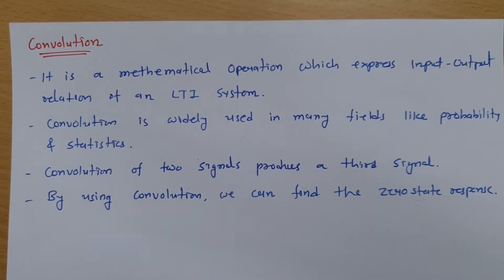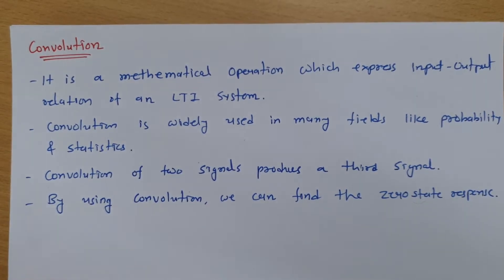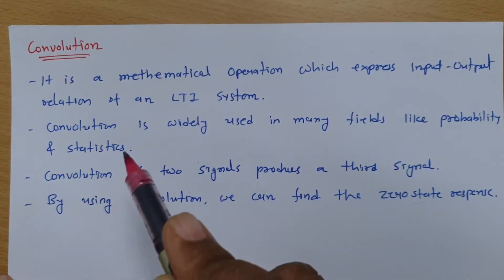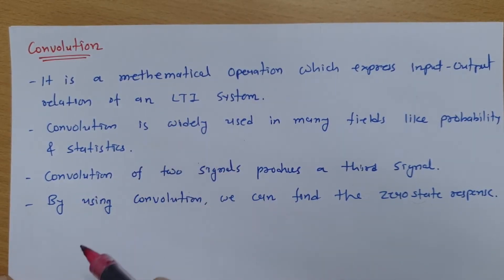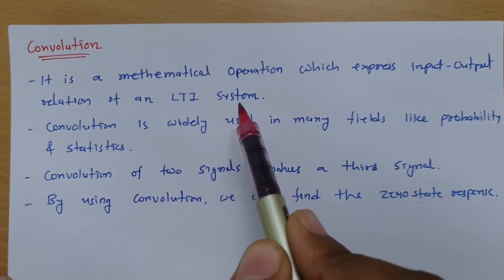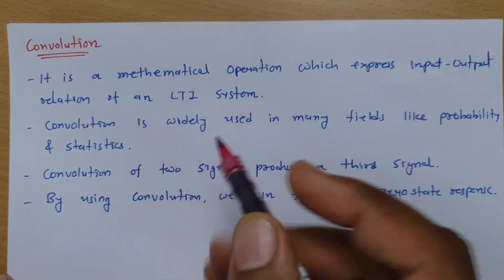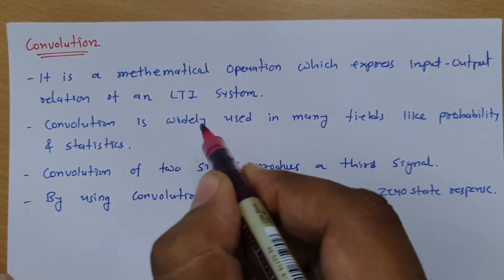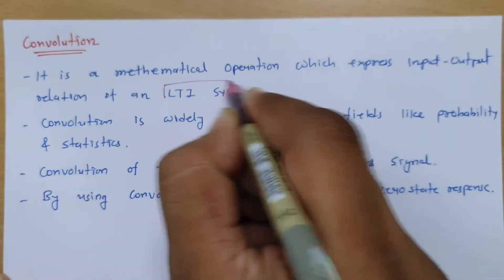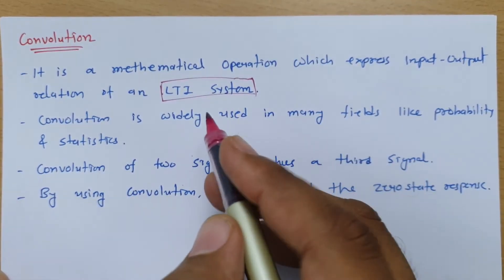Welcome to the signal and system lecture series. In this session I will be explaining some basics of convolution — what convolution is and how we can utilize it. Convolution is a mathematical operation which expresses the input-output relation for an LTI system. We apply convolution to LTI systems only, so whenever you have been given an LTI system, one can operate with convolution.